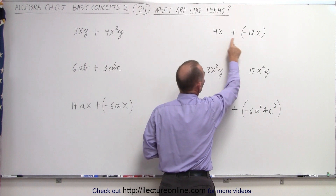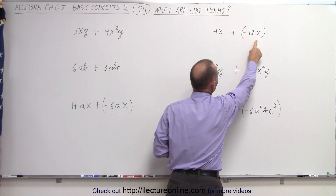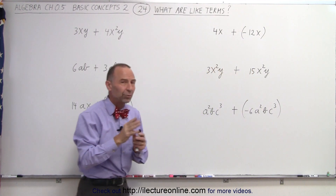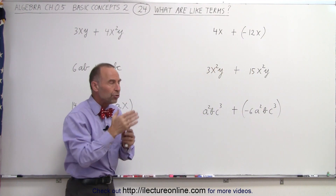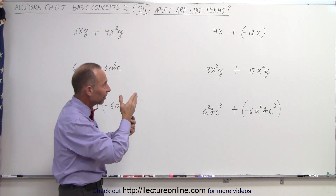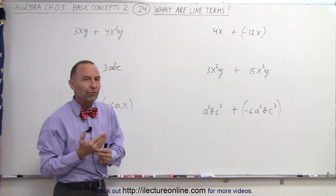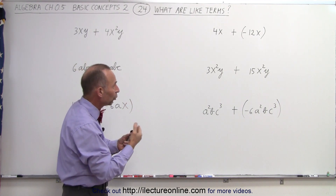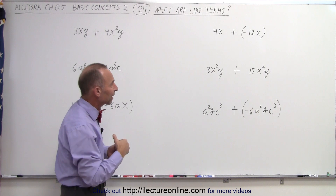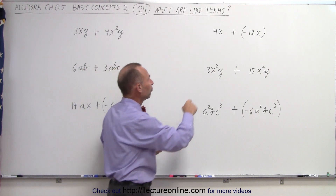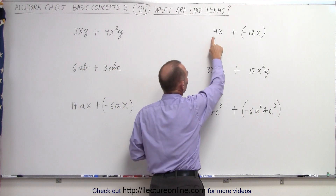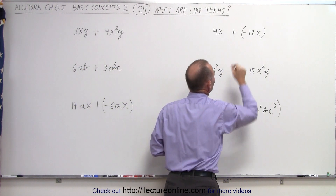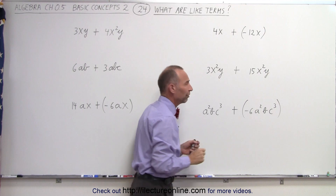4 and x are factors. Negative 12 and x are factors. Sometimes we call the number in front of the letter a numerical coefficient, or sometimes we call it a numerical factor. So 4 is a numerical coefficient of x, and minus 12 is a numerical coefficient of x.